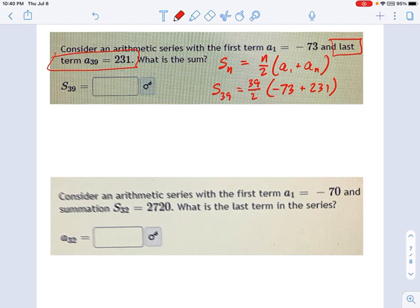So we do 39 over 2 times negative 73 plus 231. Okay, that's a big number. The sum of the first 39 terms equals 3081 in this example.